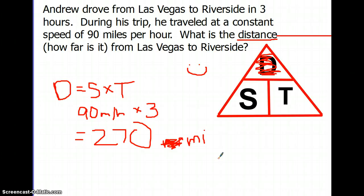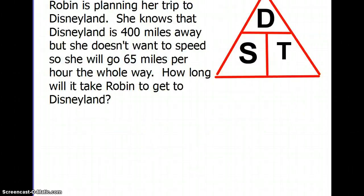Are you done, Mr. Partridge? I am, because we have an answer. Alright. Boy, us science teachers are so clever. Here we go. Robin, here's another problem. Robin is planning her trip to Disneyland. She knows that Disneyland is 400 miles away. But she doesn't want to speed, so she will go 65 miles per hour the whole way. How long will it take Robin to get to Disneyland?